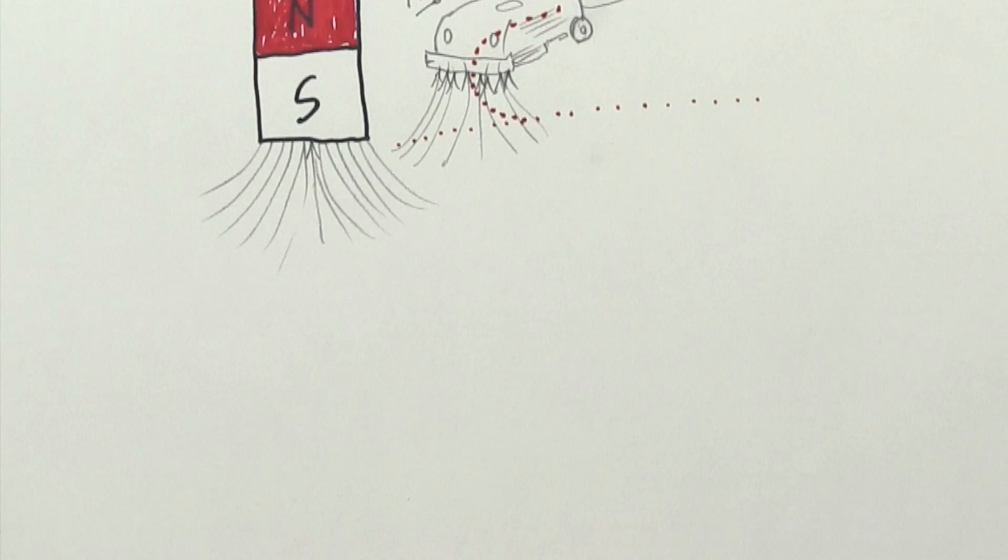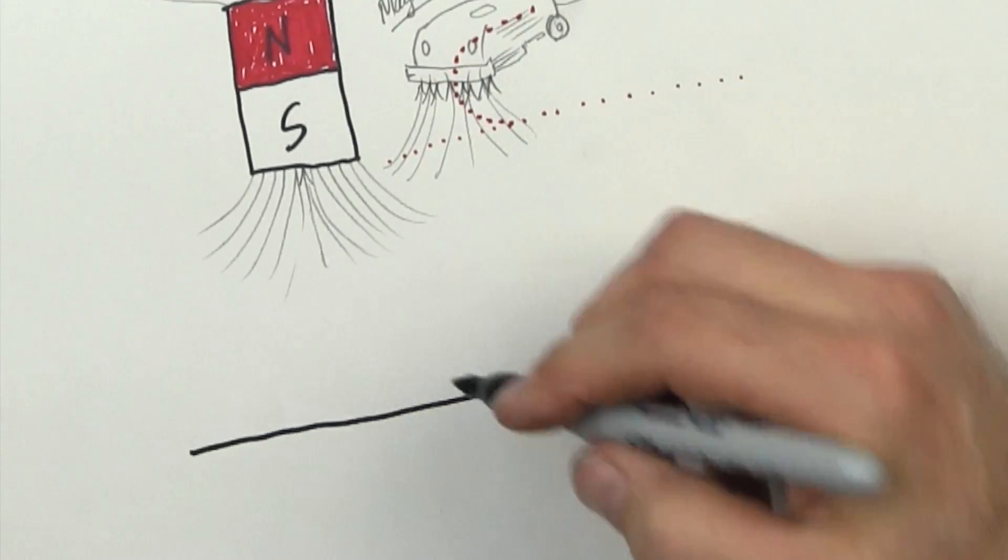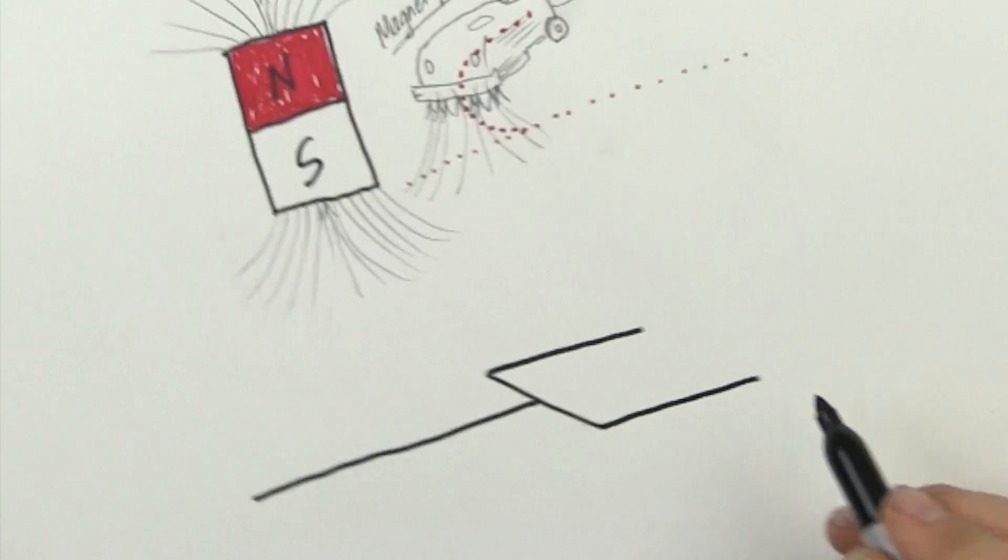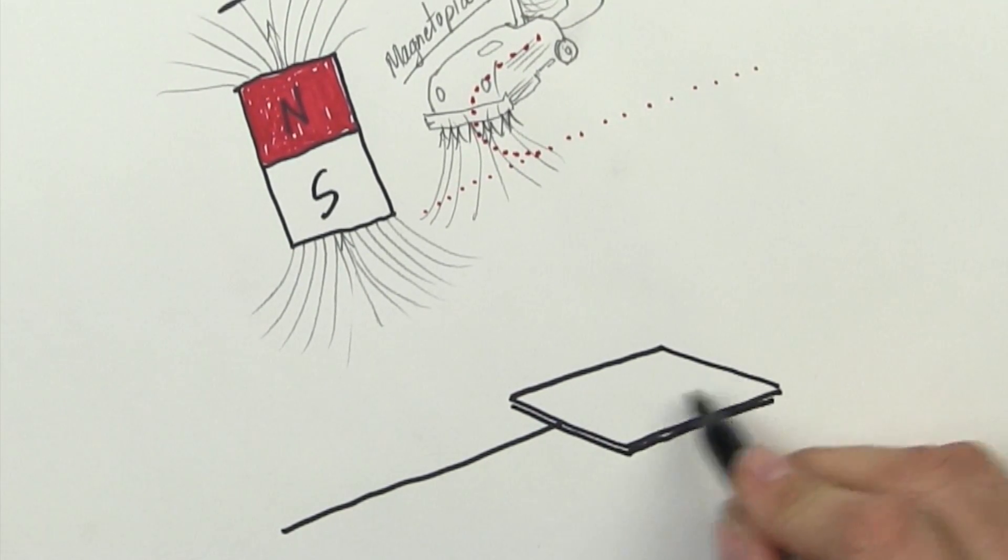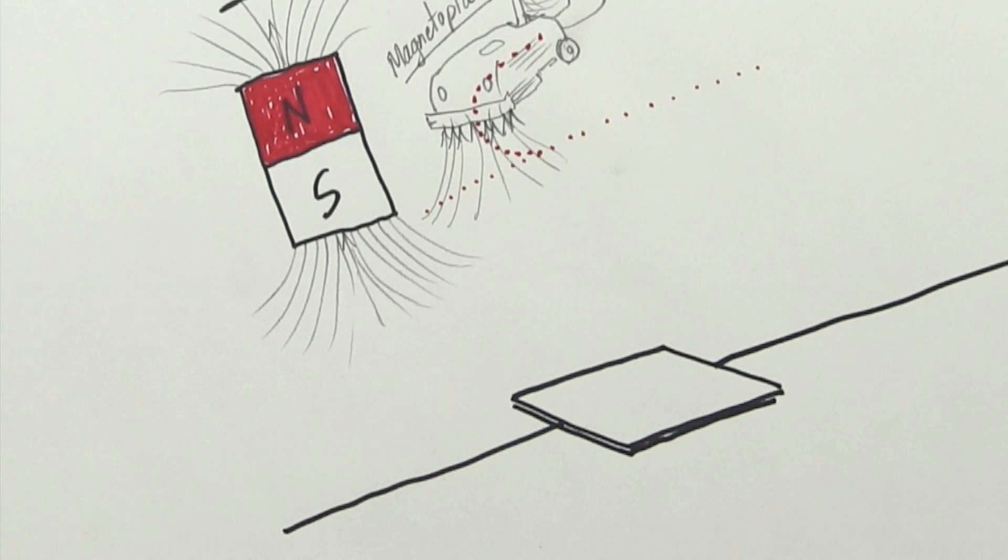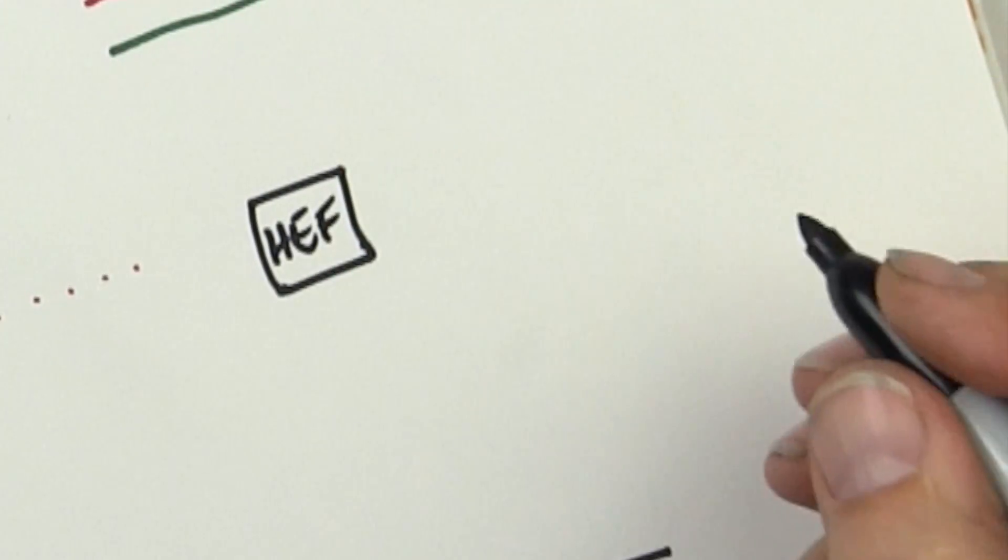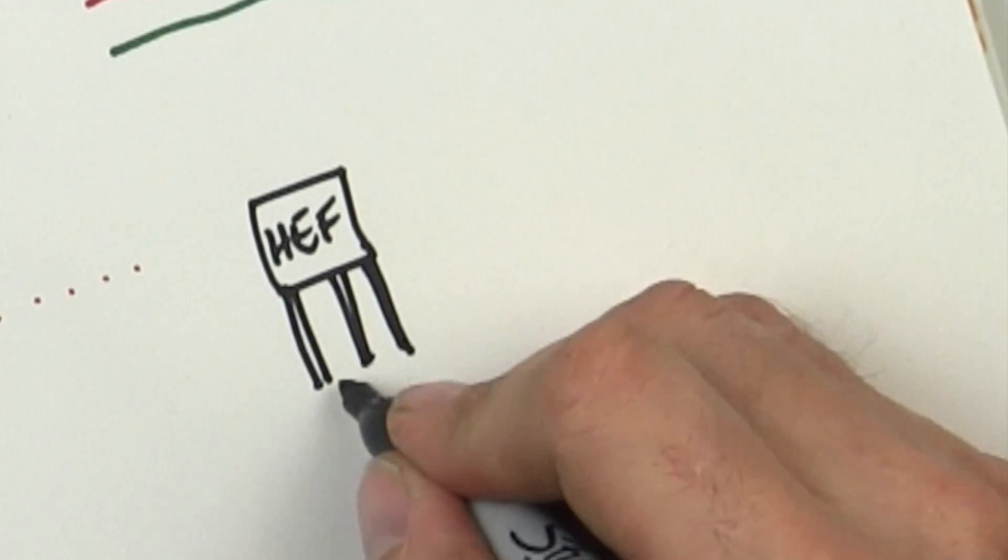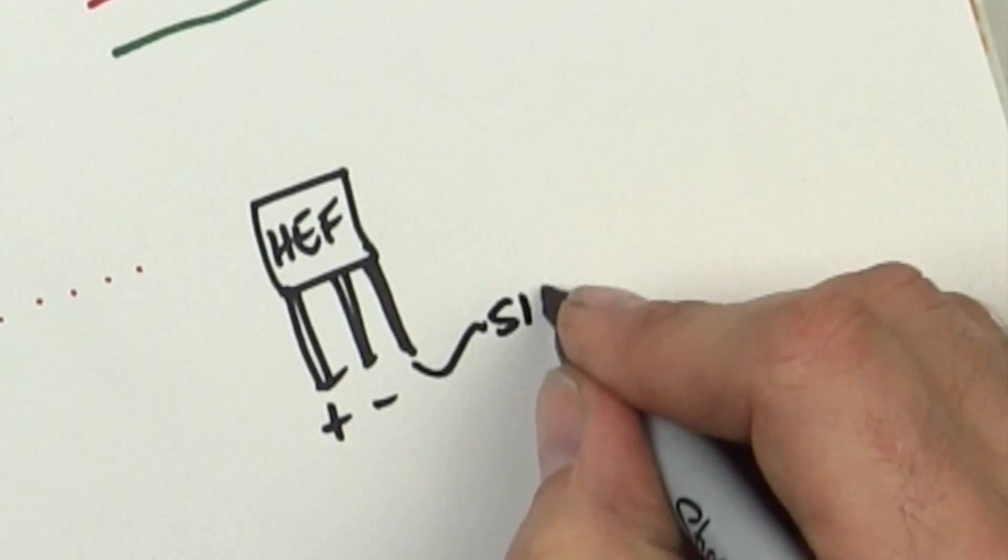So if we give ourselves a current path, and we have our bottom plate, so to speak, not really a plate but that's what I'm going to call it. If we have the bottom plate of the Hall effect sensor then current is just going to flow through it. It's very simple. The Hall effect sensor has three leads: one of them is plus, one of them is minus, and the other one is signal.